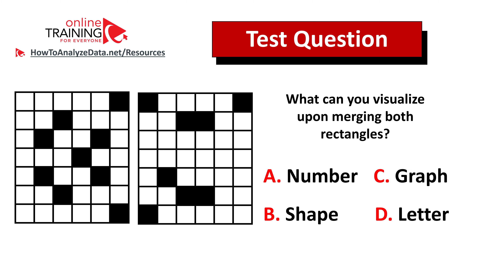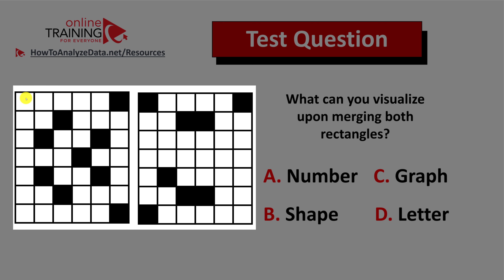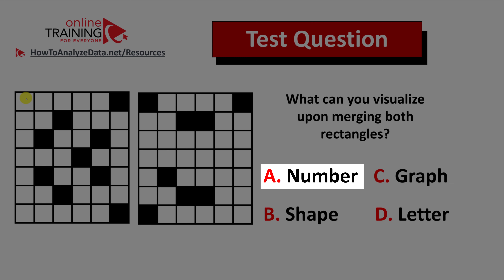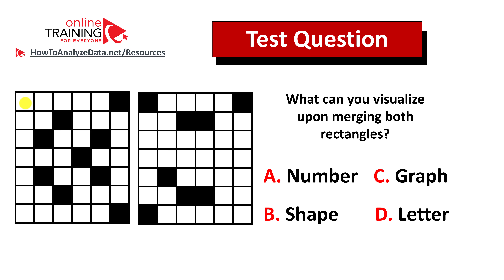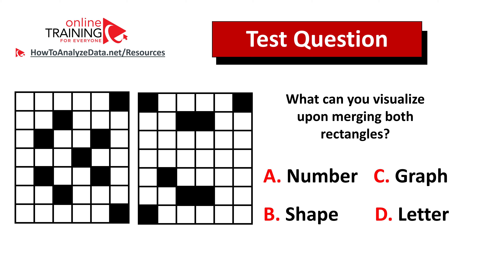Here's the next question: what can you visualize upon merging both rectangles? You are presented with two seven-by-six rectangles on the left and four possible choices: choice A number, choice B shape, choice C graph, and choice D letter. Give yourself 10 to 20 seconds to see if you can come up with the answer on your own.